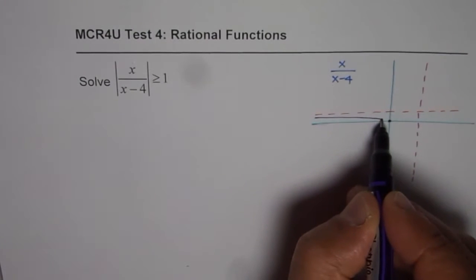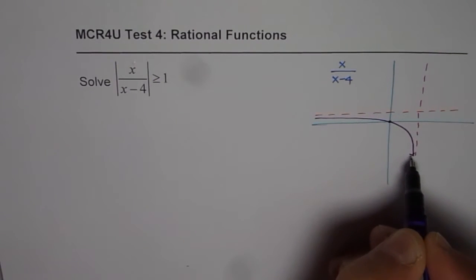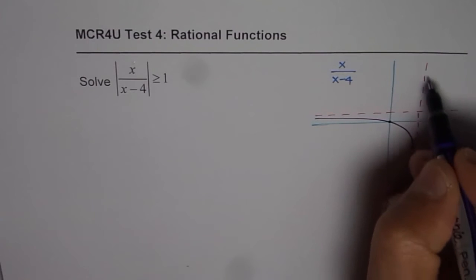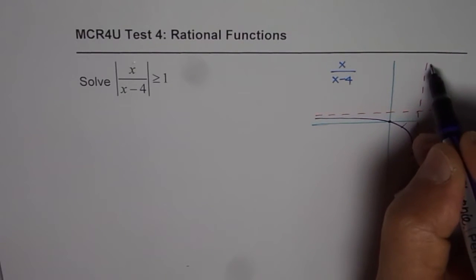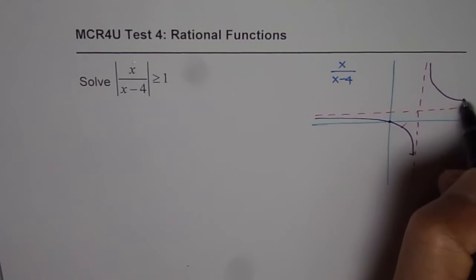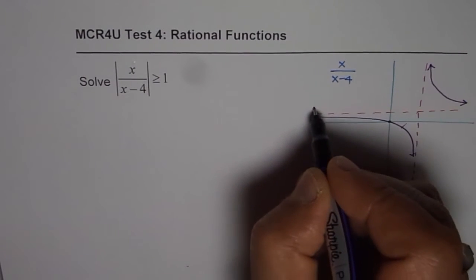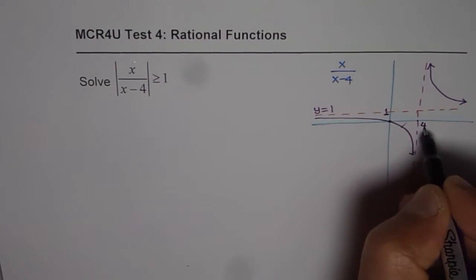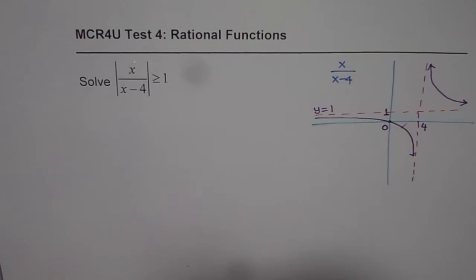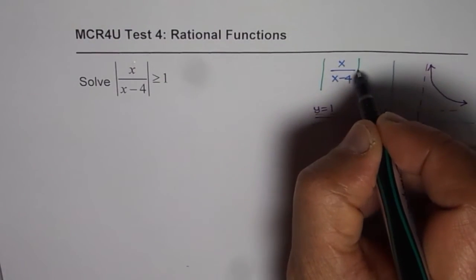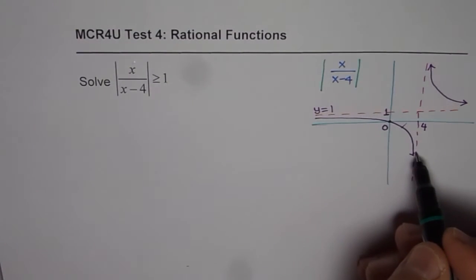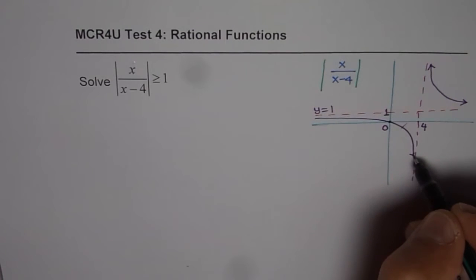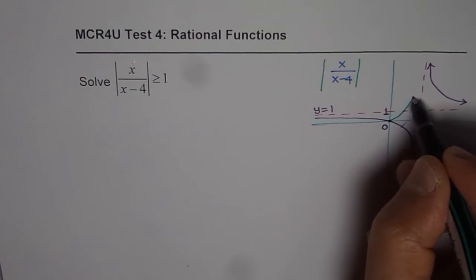We know the horizontal asymptote and the intercept, so the curve is symmetric about that point. The value y equals 1 corresponds to the horizontal asymptote and x equals 4 is the vertical asymptote, with 0 at the origin. Now, for the absolute value of this function, the negative part becomes positive — so the portion of the graph that is negative gets reflected upward.